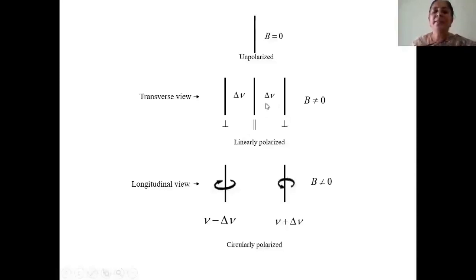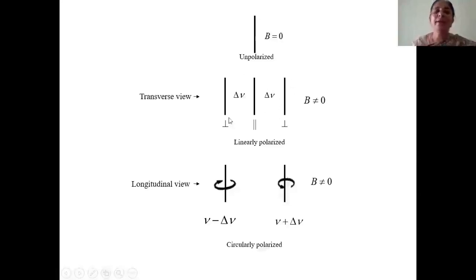The spacing between the outer line and the original line is called the Zeeman shift (Δν), and to his surprise, the Zeeman shift was the same on both sides, confirming that the outer lines are symmetrically placed about the original line.